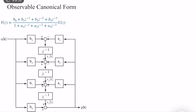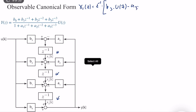So we have three state variables x1, x2, and x3. It's a third-order system and we should have three states for a minimal representation. So x1 of z, which is here, is equal to z to the power minus 1 times b3 times u of z minus a3 times y of z. But I don't want to use y of z because y of z is our output. Instead, I should use either the input or the states. So y of z, as you can see, is equal to u of z times b0, plus x3 of z.